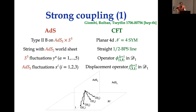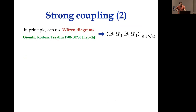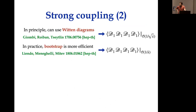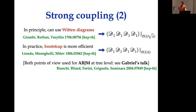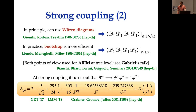The displacement operator of dimension 2 is dual to AdS5 fluctuations transverse to the AdS2. To compute observables one can use Witten diagrams, the analog of Feynman diagrams. This was used to compute the simplest correlators between half-BPS operators at tree level. More efficiently, one can use bootstrap, which was done for the first time by Pedro Liendo, Carlo Meneghelli, and Vladimir Mitev, where the same observable was computed to order 1/lambda.